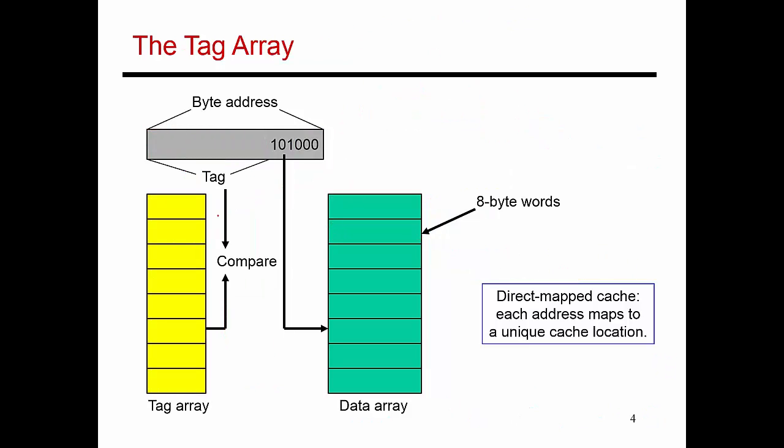So this next slide shows you exactly this organization. I have three bits over here, which are my offset. They tell me which byte inside a block I'm interested in. The next three bits tell me block ID modulo 8, and so that tells me my set number. So this is referred to as my index into my cache. And then the next 26 bits are my tag bits.